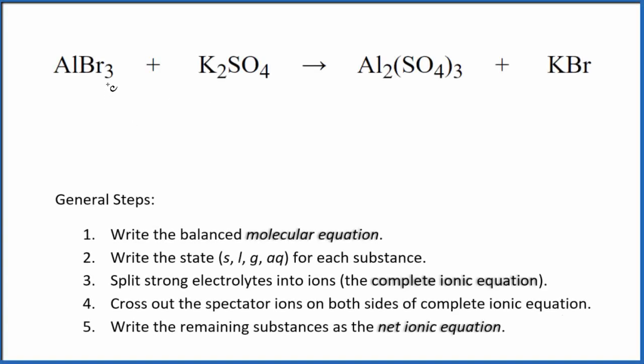Let's write the balanced net ionic equation for AlBr3 plus K2SO4, aluminum bromide and potassium sulfate. The first thing we do with net ionic equations is balance the molecular equation. This is the molecular equation.